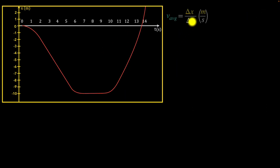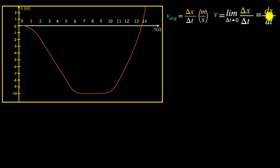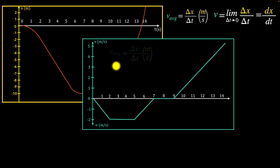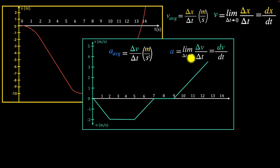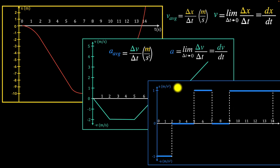In summary: velocity is the rate of change of position, with units of meters per second. Measured over a time interval, you get average velocity; taking the limit as delta t tends to zero gives the instantaneous value — the derivative. In a position-time graph, average velocity is the slope of a secant line, and instantaneous velocity is the slope of a tangent line. Acceleration is the rate of change of velocity with units of meters per second squared. Similarly, average acceleration is the secant slope on the velocity-time graph, and instantaneous acceleration is the tangent slope. The derivative of velocity gives you acceleration.